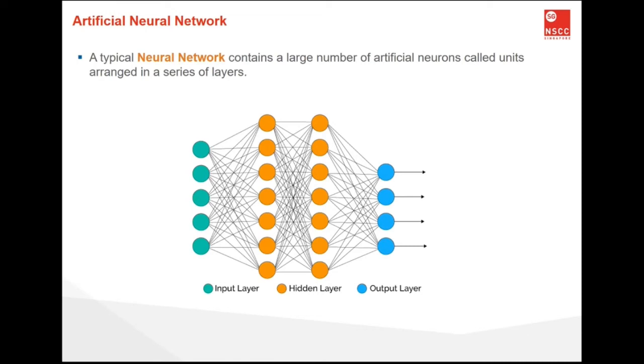The predictive capabilities of neural networks come from the hierarchical or multi-layer structure of these networks. The data structure can learn to represent features at different scales or resolutions and combine them into higher-order features. For example, from lines to a collection of lines and to shapes. In this sense, neural networks learn a mapping. Mathematically, they are capable of learning any mapping function and have been proven to be a universal approximation algorithm.